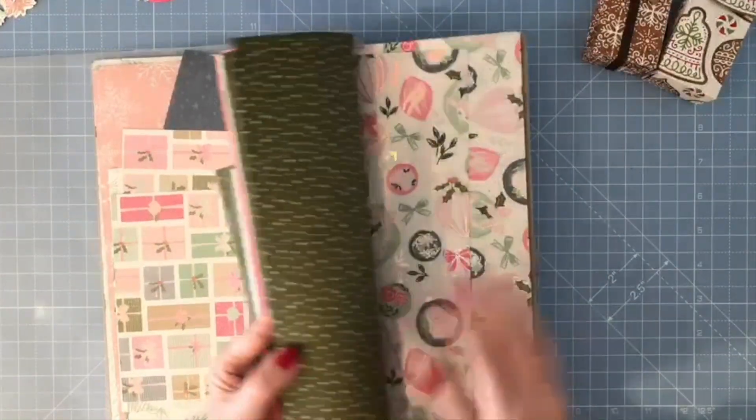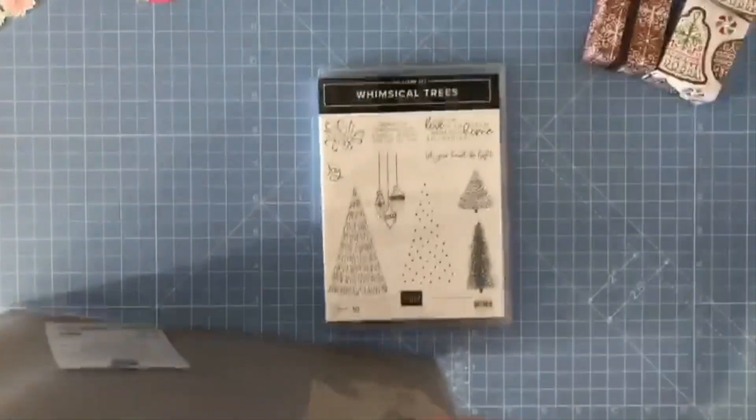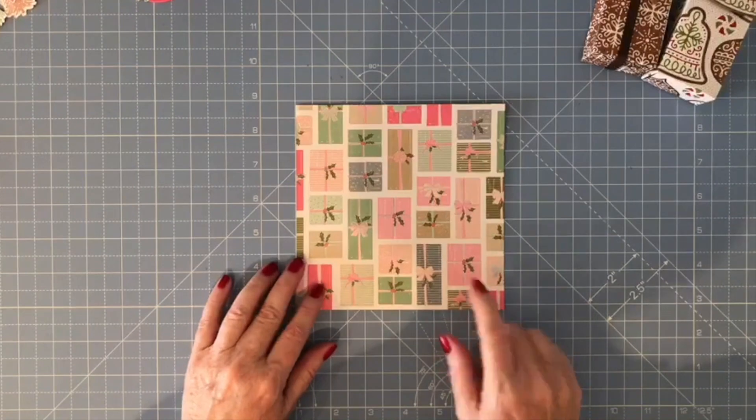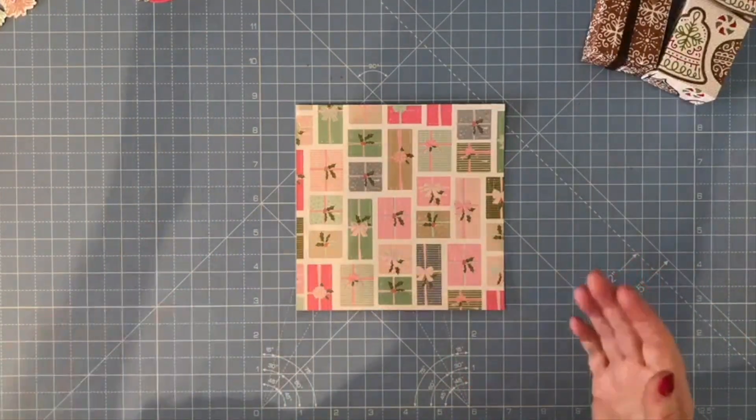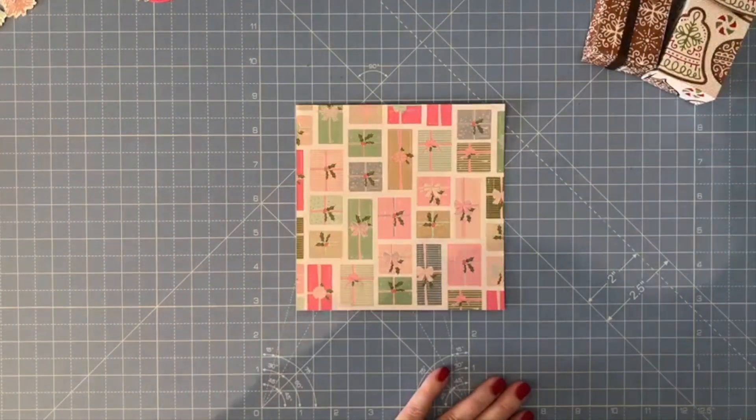There's some beautiful patterns but I'm going to be using the one with the presents. What you need for this is a piece of paper that is six by six, so you could get four of these from one sheet of twelve by twelve.